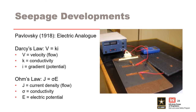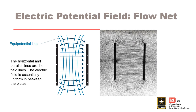Around this same time, another method of solving groundwater flow was developed in Russia by Professor Pavlosky — called the electric analog. Ohm's law for electricity is the same form as Darcy's law, so the solution to an electrical field is the same as the solution for a groundwater potential field. This is illustrated by a classic magnetic field experiment with iron filings, where we can think of those lines as flow lines and sketch equal potential lines across that field to form a flow net.